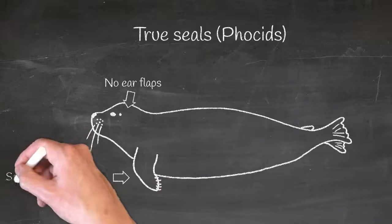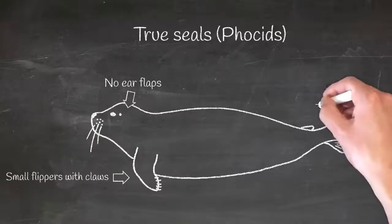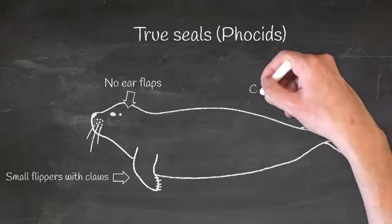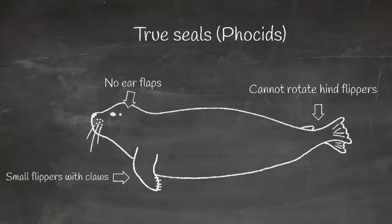Second, they have small clawed front flippers which they can't use to push themselves up with. And third, they cannot move their behind flippers under them to be able to walk on land, so they just kind of wriggle back into the water.